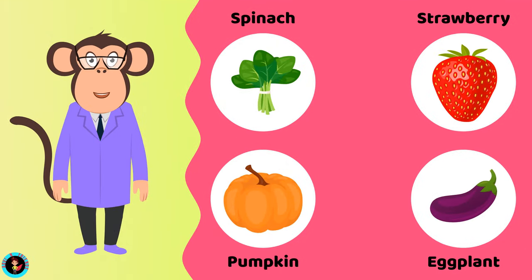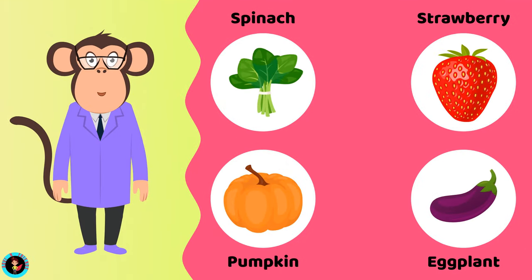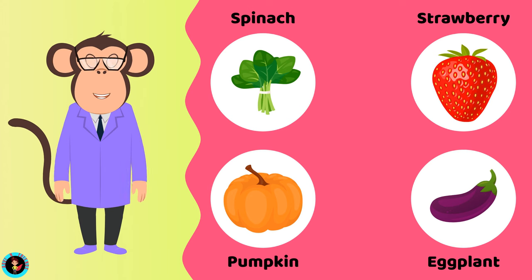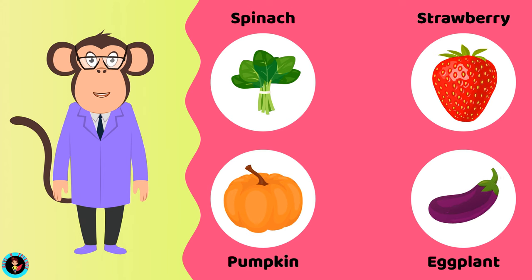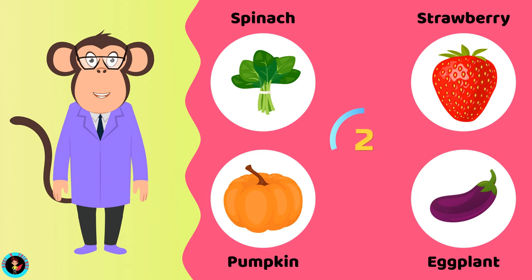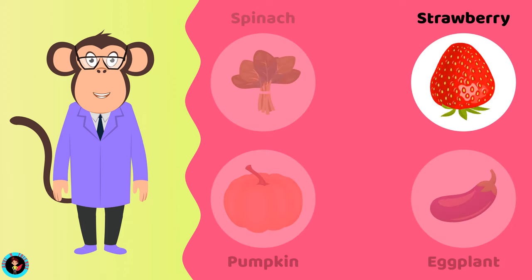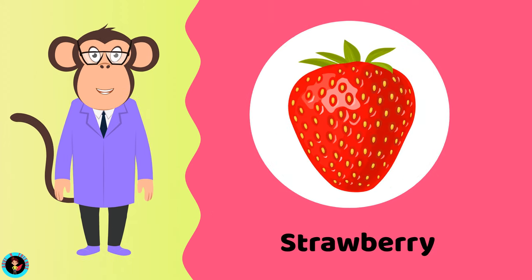Which among these is a fruit? Spinach. Strawberry. Pumpkin. Eggplant. The right answer is Strawberry. Strawberry is a fruit.